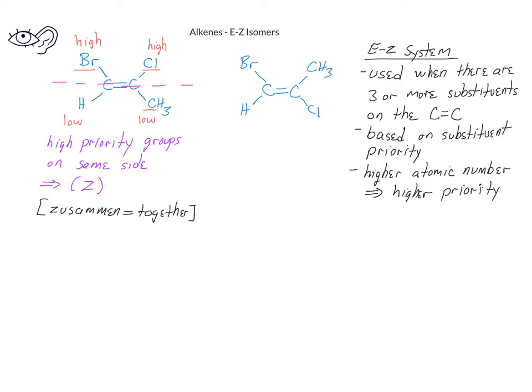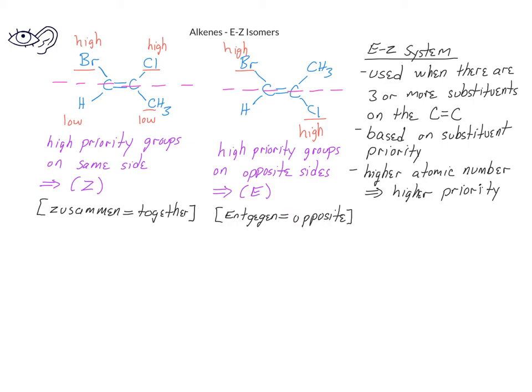Z is German for Zusammen, which means together. If the two high priority groups are on opposite sides of the double bond, we indicate this with the capital letter E, which stands for the German Entgegen, which means opposite.